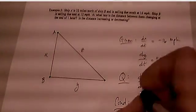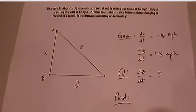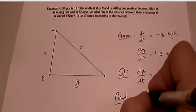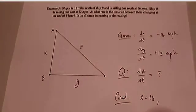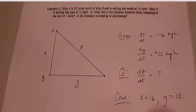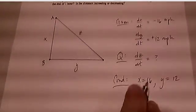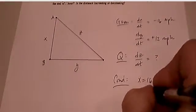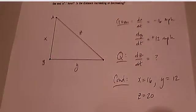Well, after one hour, X is going to be 32 minus 16, so X is going to be 16. And of course, Y is going to be 12, and of course Z is going to be 20. There's that 3, 4, 5 right triangle again.